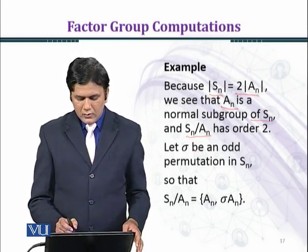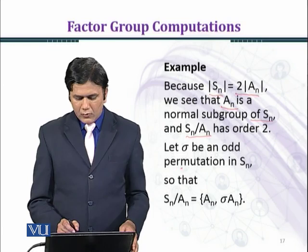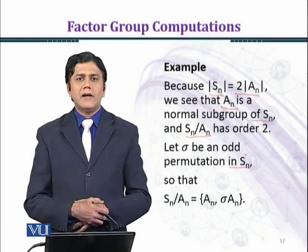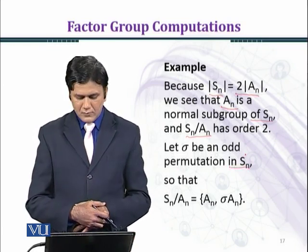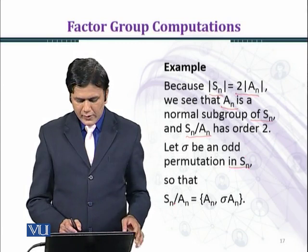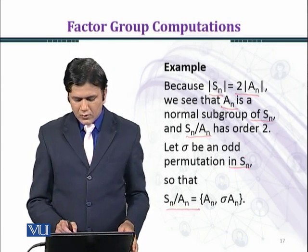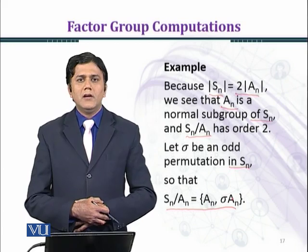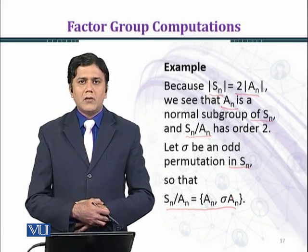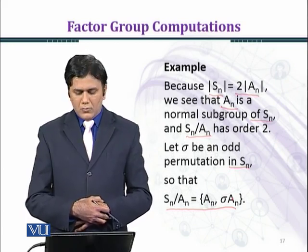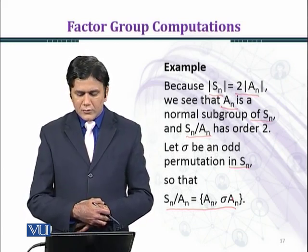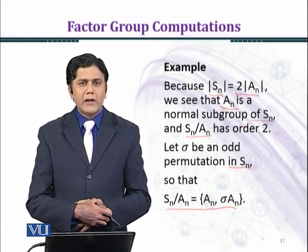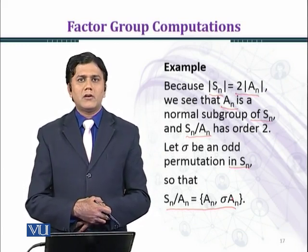Let sigma be an odd permutation in S_n, so that S_n over A_n equals {A_n, sigma·A_n}. A_n is a normal subgroup of S_n, and S_n over A_n has order 2.